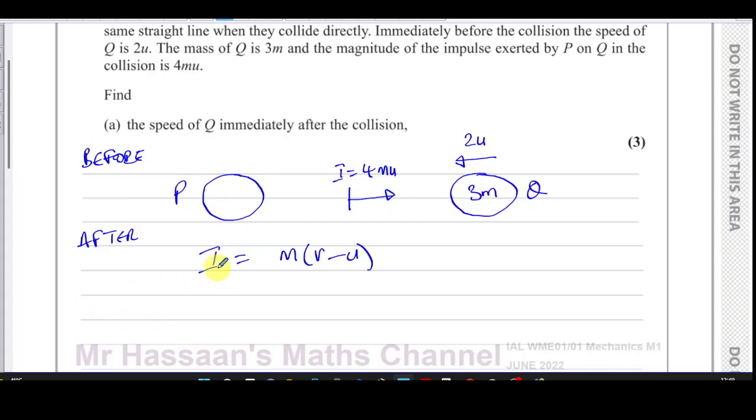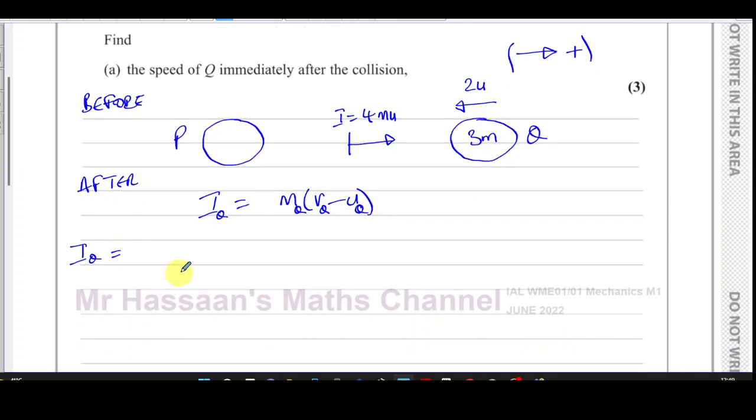We can say that the impulse exerted on Q—I'll call that I_Q—is equal to the mass of Q times the final velocity of Q minus the original velocity of Q. So I_Q = m(v_Q final - v_Q initial). Now I've got to decide what I'm going to take as positive. I'm going to take the right side as positive for my calculation purposes, not for writing my final answer, but for calculation purposes. It's very important for us to understand that.